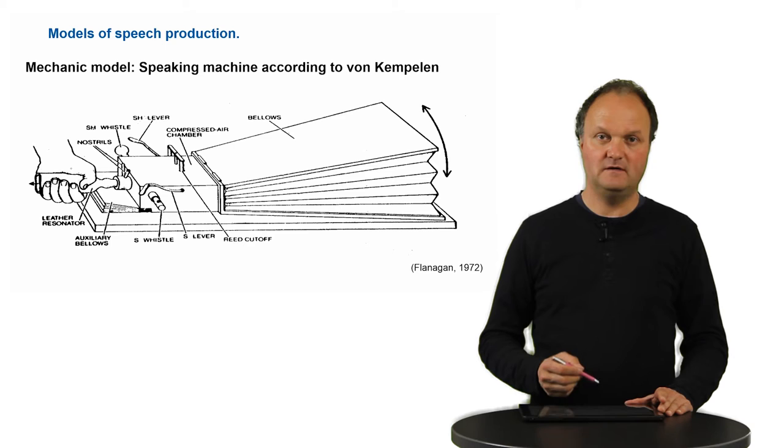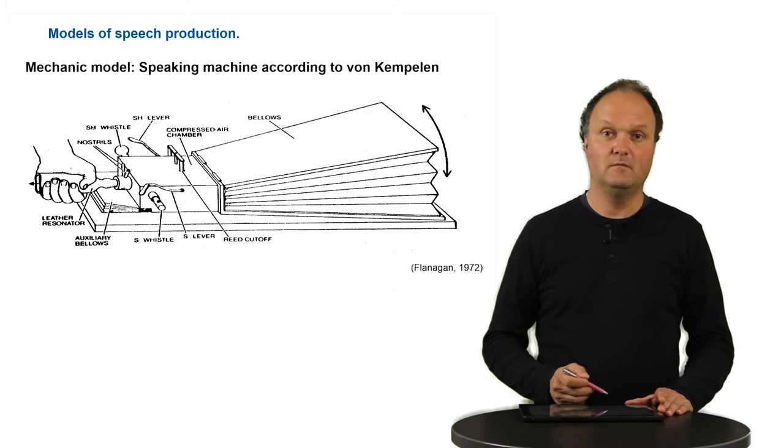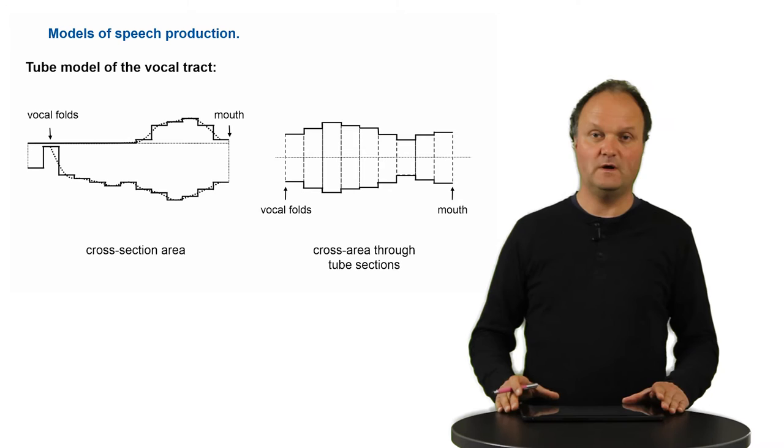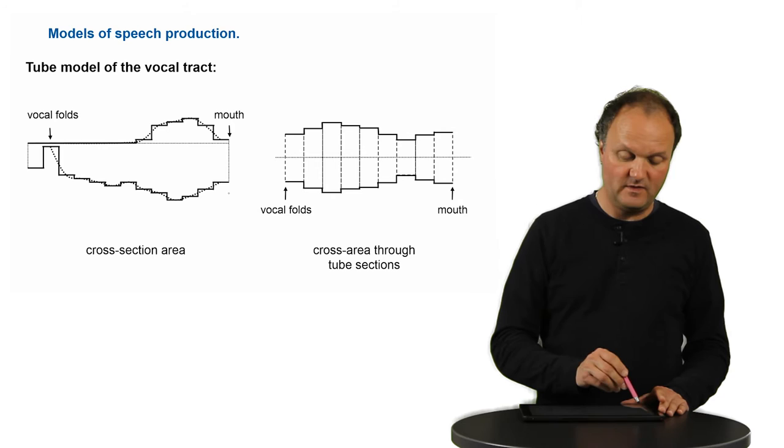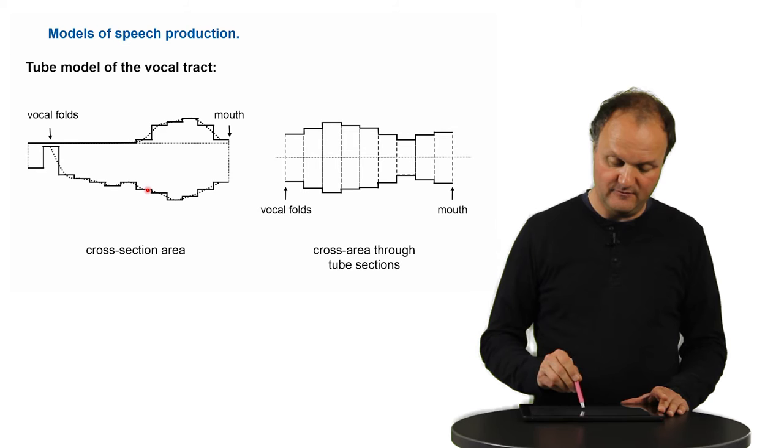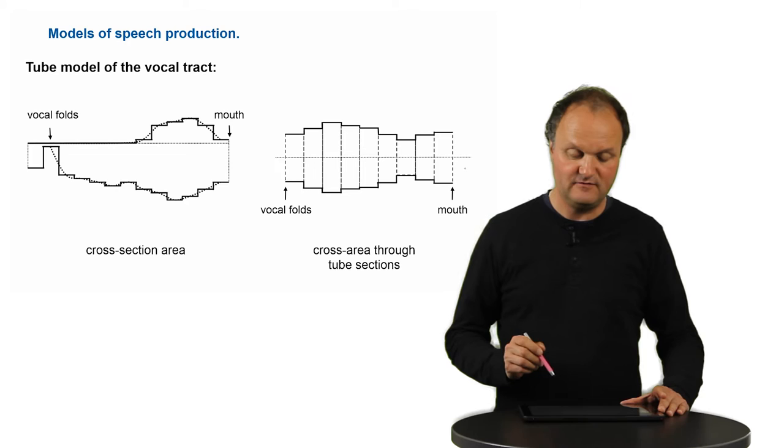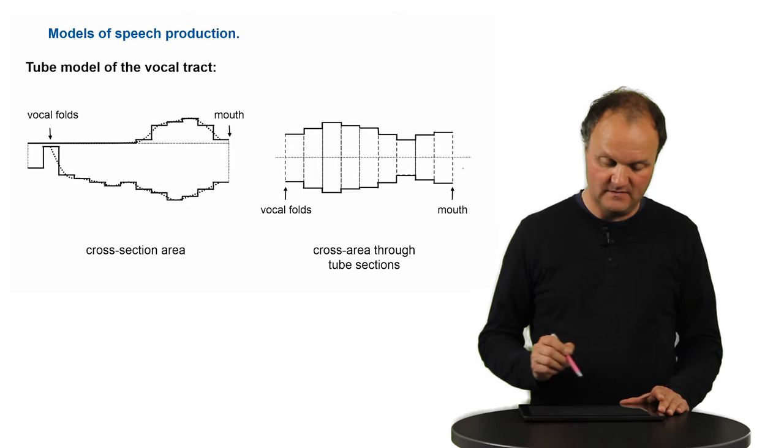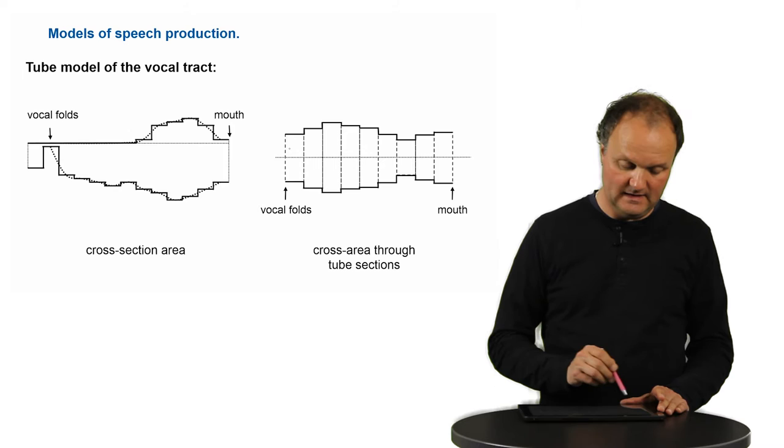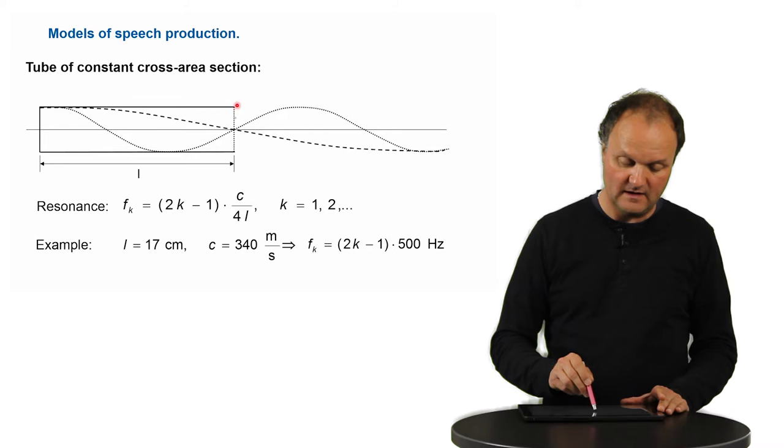These historic machines are very interesting, but nowadays one tries to use other models, more precise models, especially models of the vocal tract. One of the most popular models is the so-called tube model. As you have already seen, we can describe the vocal tract as a series of tubes with different diameters or different cross-area sections here, and I have put those little elements of tubes in a row so that you can more easily identify them. We can calculate the sound pressure wave which can exist inside such a series of tubes, and in order to start in a simple way, I will first consider one simple element of such a tube, that is a tube of constant cross-area section here.